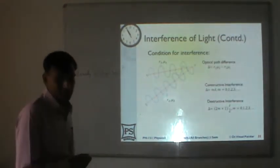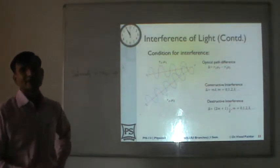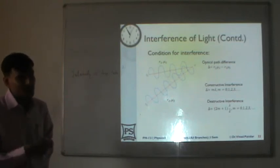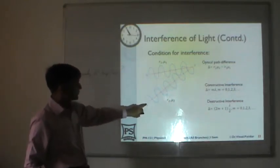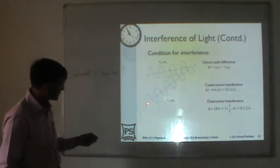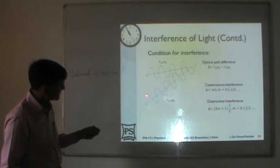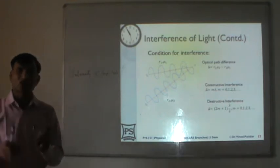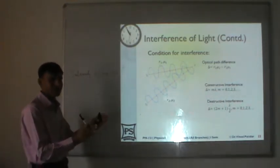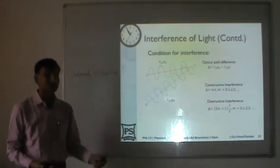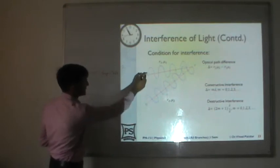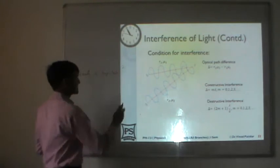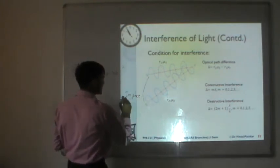To develop the mathematical conditions — to understand at which point brightness or darkness will occur — consider two sources S1 and S2, with light emitted in phase. The light travels through different mediums. At some point P on a screen, we want to know whether waves arrive in phase or opposite phase. Since light travels slower in a medium with refractive index greater than 1, we calculate the optical path. The optical path from S1 to P is mu1 × R1, and from S2 to P is mu2 × R2. The optical path difference is (mu2 × R2 - mu1 × R1).